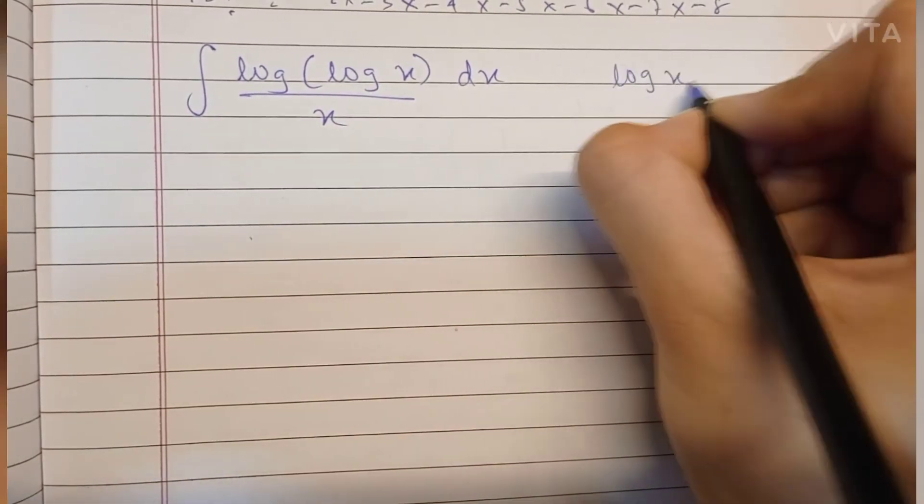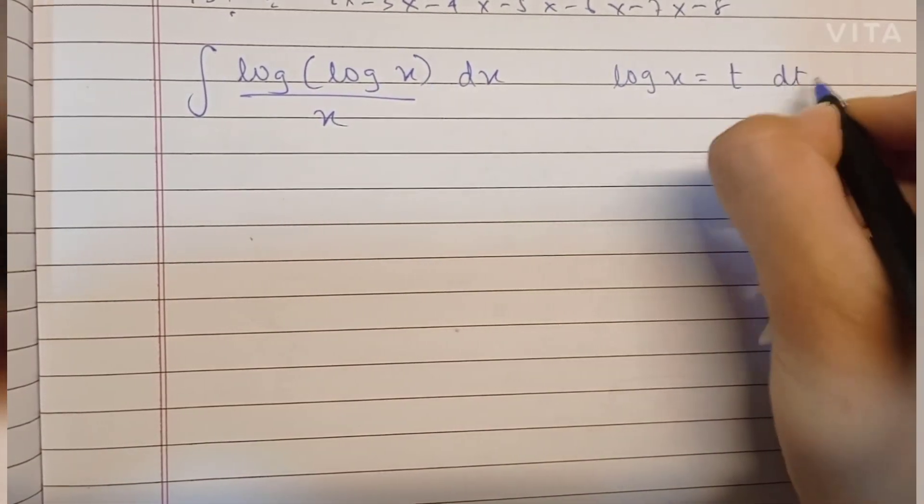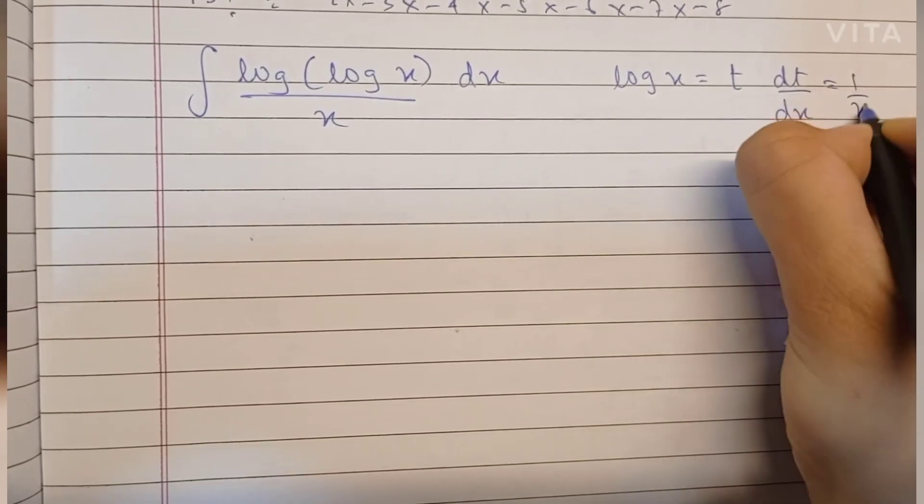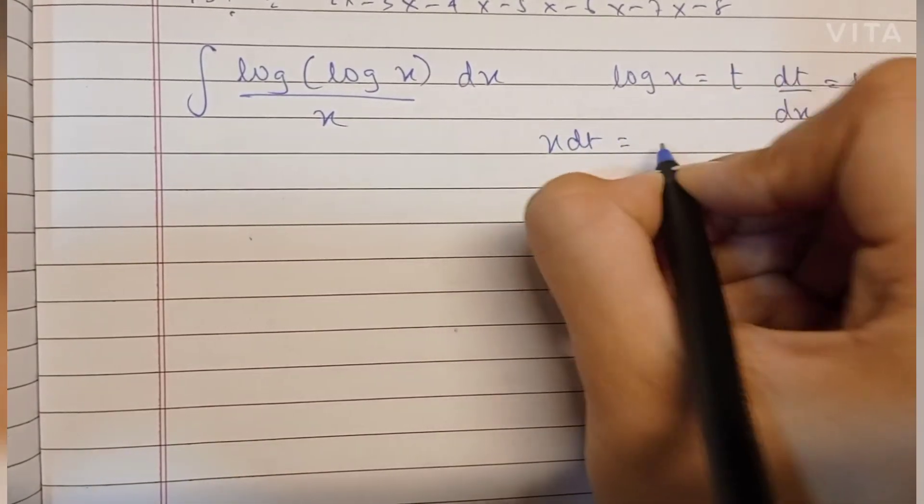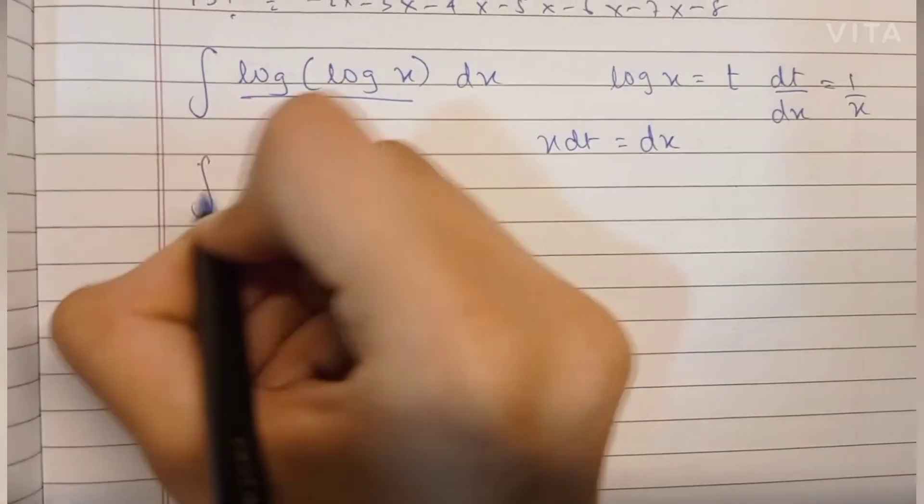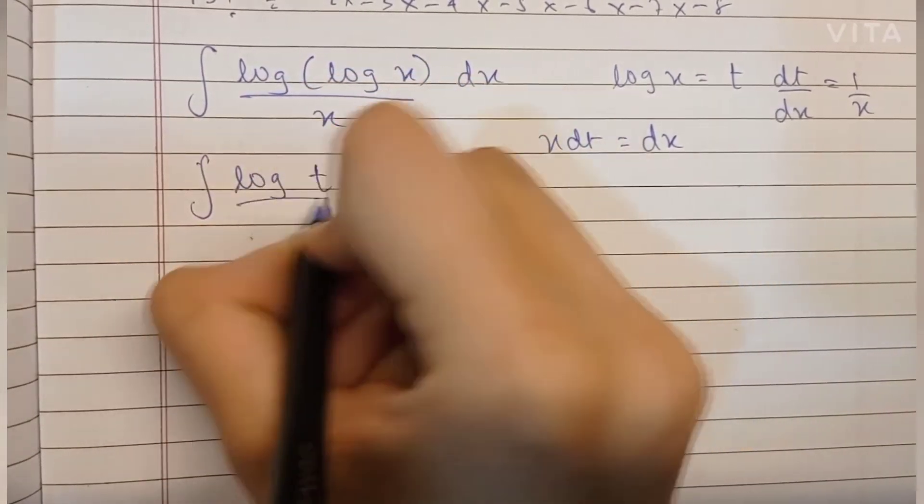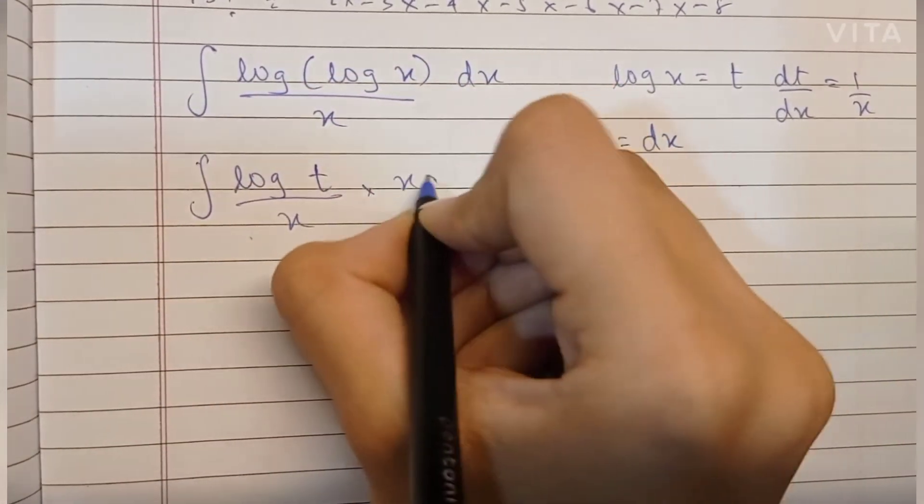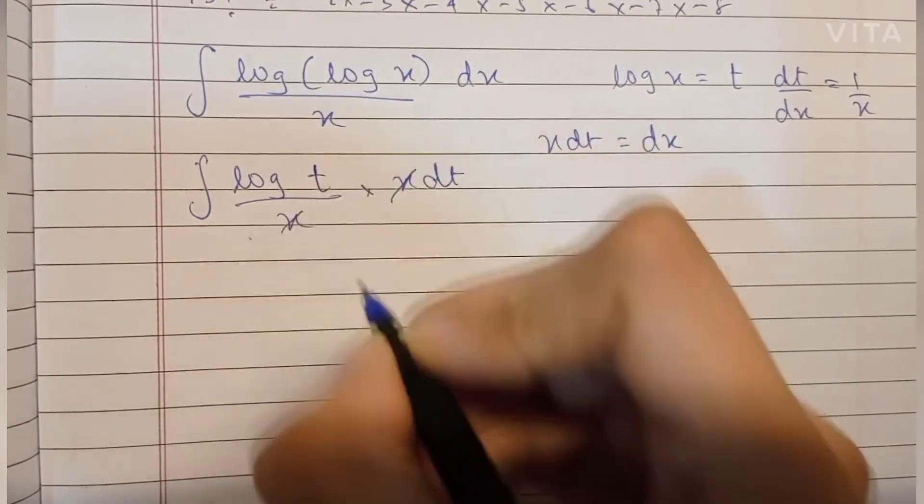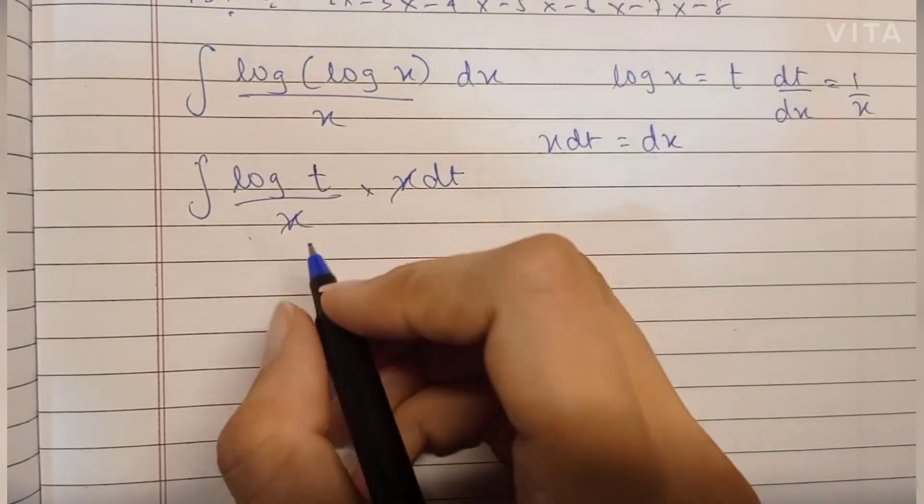First of all, I'm going to substitute log x as t. dt by dx becomes 1 by x, so x dt becomes dx. So we have log t upon x into x dt. The x gets cancelled and we've solved the integral.